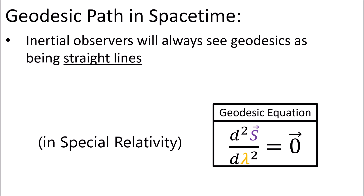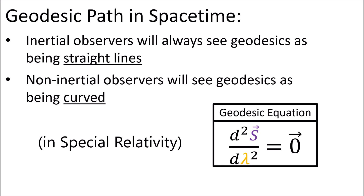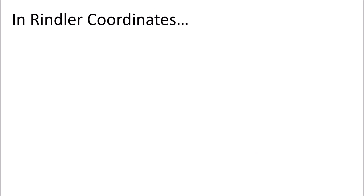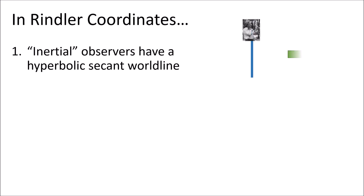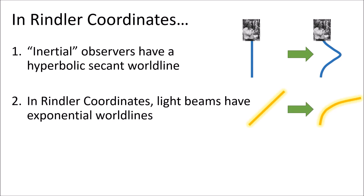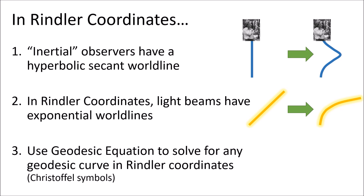It turns out that inertial observers will always see geodesics as being straight lines, but non-inertial observers will see geodesics as being curved. In this video, we will show that in Rindler coordinates, inertial observers have a geodesic world line given by a hyperbolic secant. Next, we will show that light beams in Rindler coordinates have exponential world lines. Finally, we will use the geodesic equation to solve for any geodesic curve in Rindler coordinates.